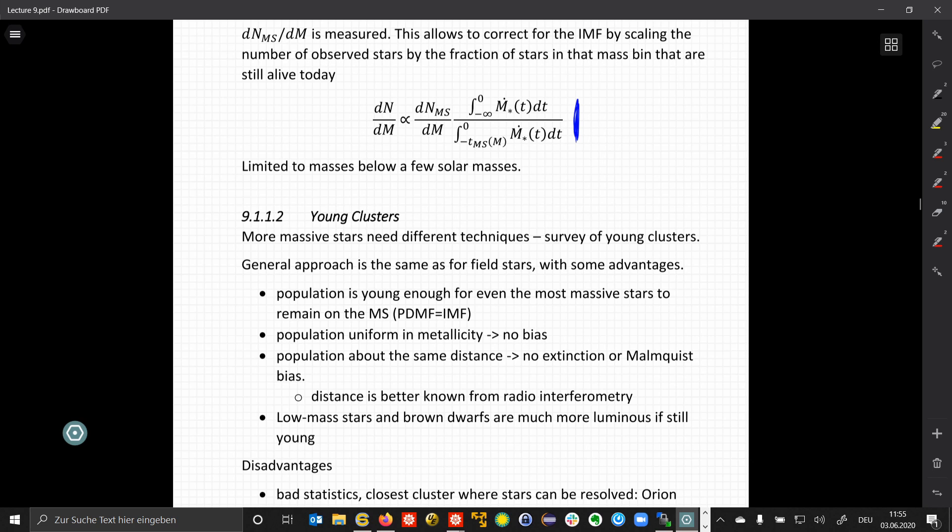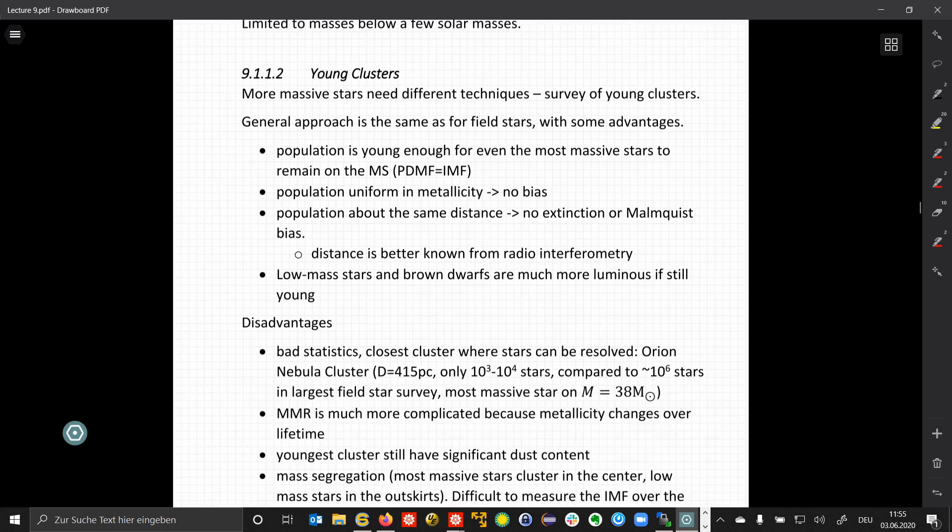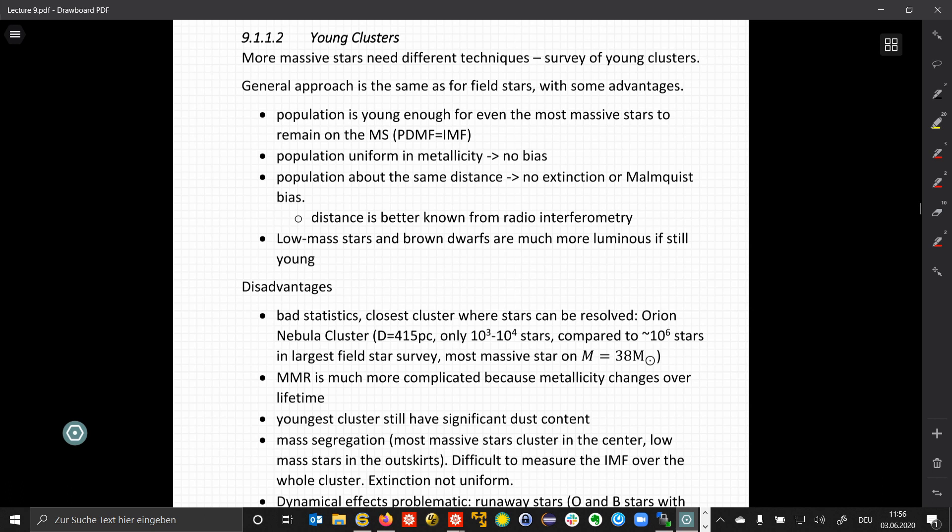And we have the advantage that these low mass stars and brown dwarfs are much younger, and therefore still much more luminous compared to when they are older. The disadvantages of these objects are the bad statistics. So the closest massive cluster that we can observe is the Orion Nebula cluster, which is 415 or 430 parsecs away, and hosts only a few thousand up to maybe 10,000 stars. Compared to about a million stars in the largest field star survey, or a billion stars in the recent Gaia sample, we have much, much worse statistics. On the other hand, the most massive star in the Orion Nebula cluster is in the order of 14 solar masses, so we reach already very high stellar masses.